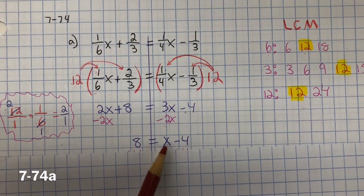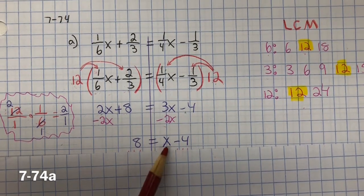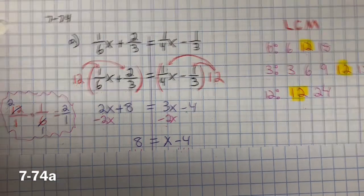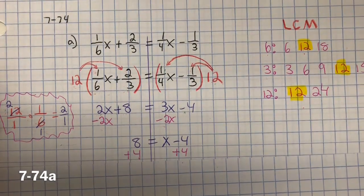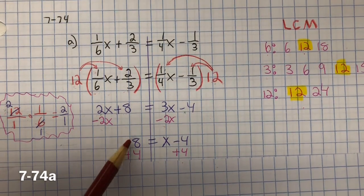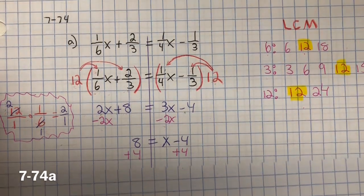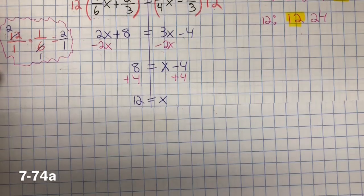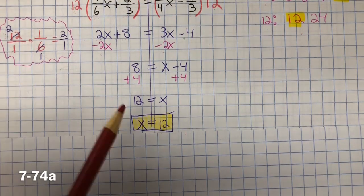Now we want to isolate the variables. Inverse property of subtraction is addition. So we're going to add 4 to both sides, created a zero pair. 8 plus 4 is 12. So 12 equals x, x equals 12.